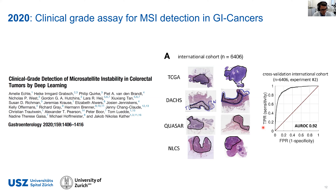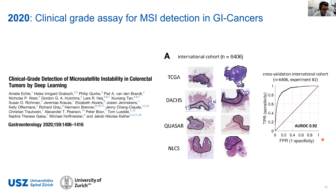What is even more exciting is that just one year later, we go from a cohort of only 300 patients with an AUC of 0.84 to an almost clinical-grade assay published by the same group, bringing together four large international datasets with genomic data and showing that just using the H&E image you can generate clinical-grade detection and classification of MSI. We are already in the range of standard assays based on immunohistochemistry to detect this genotype. The development in the field is incredibly fast.